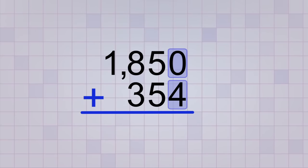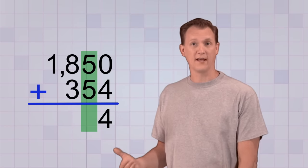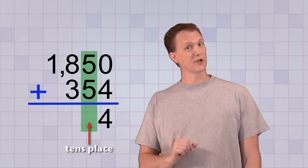Again, we always start by adding the digits in the ones place. 0 plus 4 equals 4. So a 4 goes in the ones place of our answer. Now we move to the next place to the left, the tens place. And here comes the tricky part.